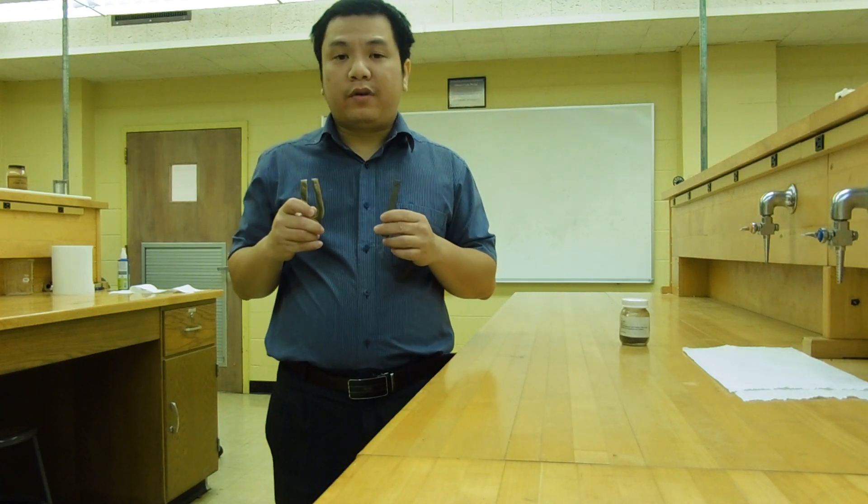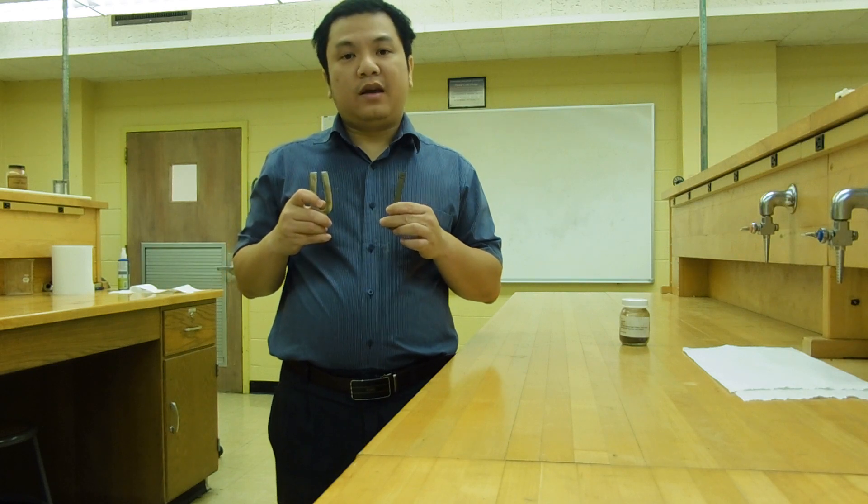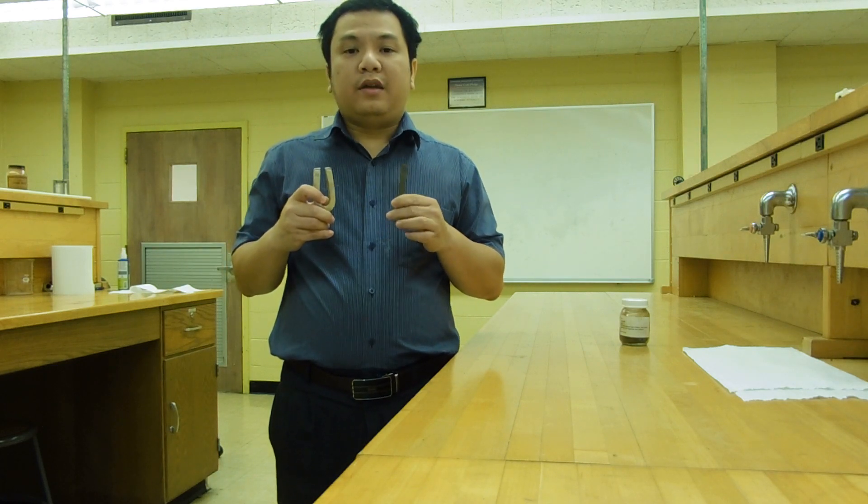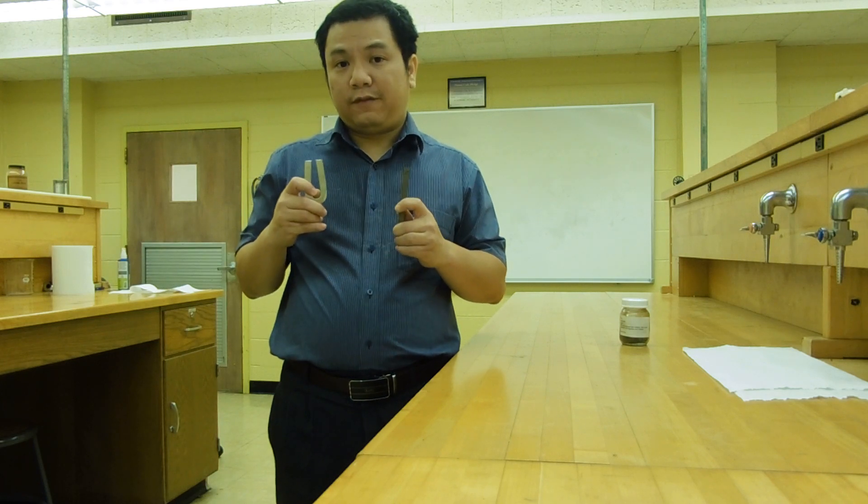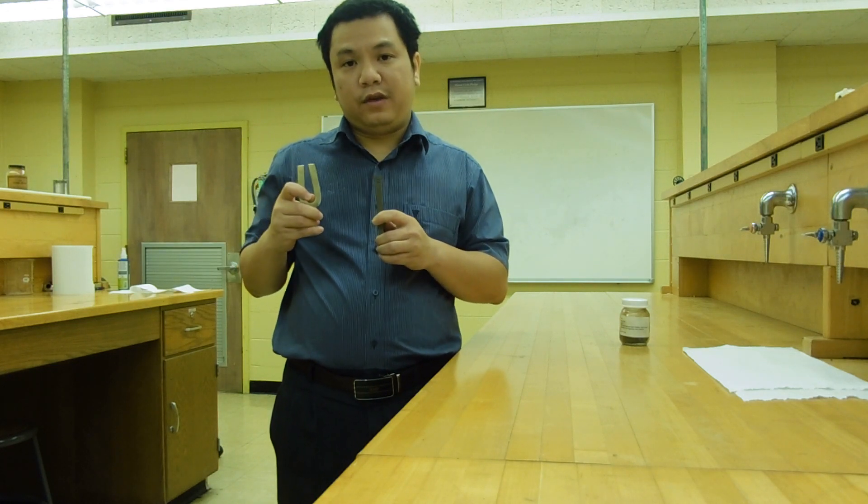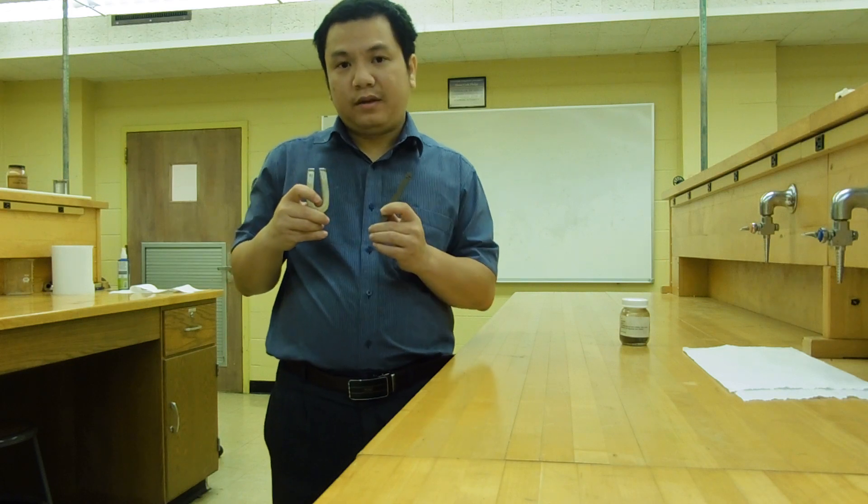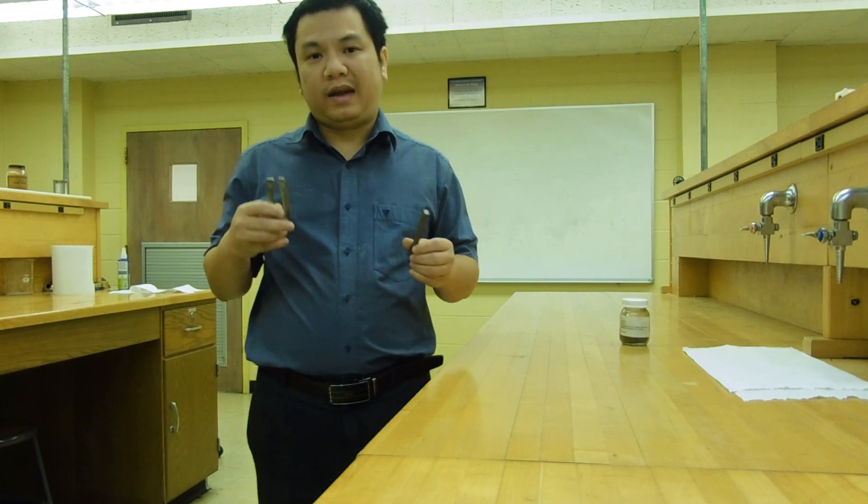As you know, around a bar magnet or a horseshoe magnet, there is a magnetic field. However, we do not see this field because it is invisible. In the experiment today, I'm going to show you a visualization of the magnetic field through something that we call magnetic field lines. Magnetic field lines are lines that we draw in the region of the magnetic field to visualize it. So let's see how magnetic field lines look like around a bar magnet and around a horseshoe magnet.